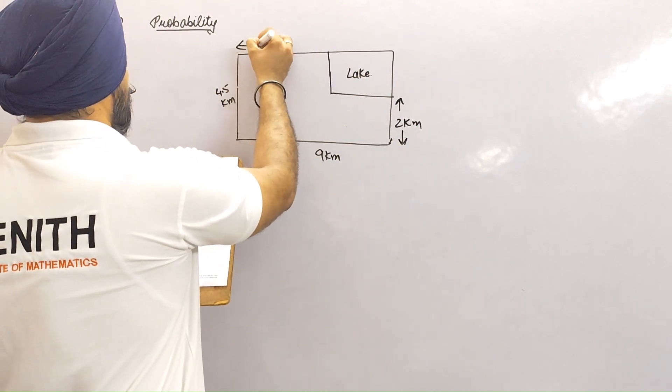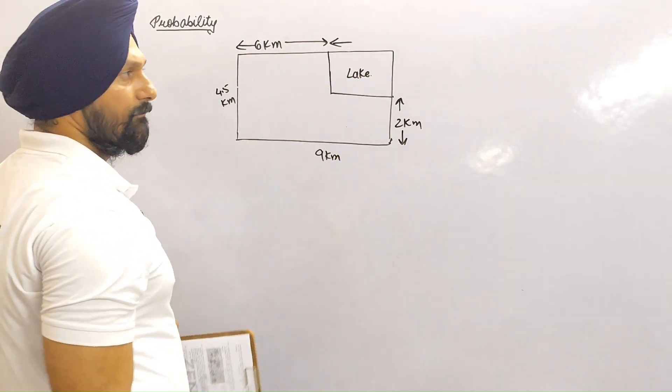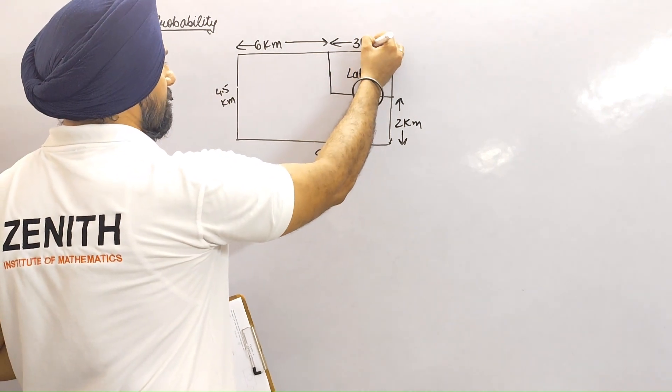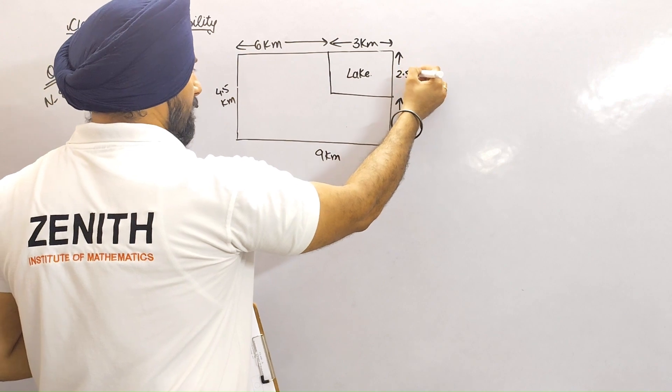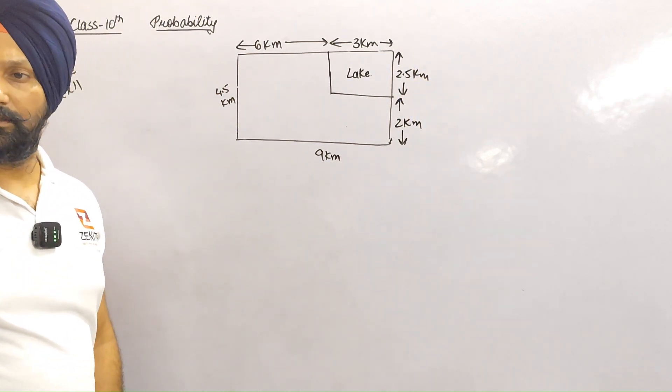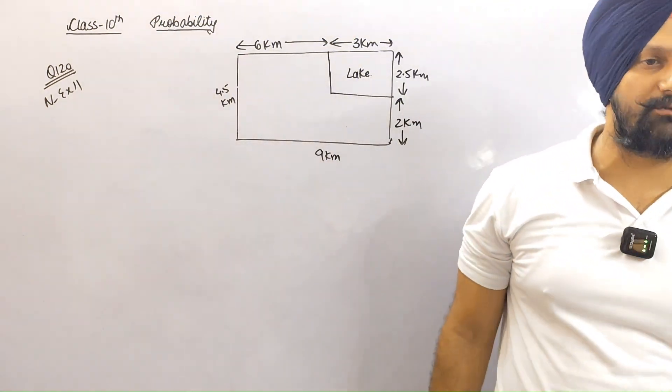6 km. So you can determine this missing dimension - this is 3 kilometers. Very nice, so now the question about this problem - the helicopter is missing.